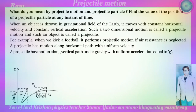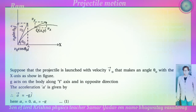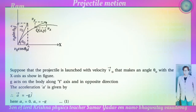A projectile has motion along the horizontal path with uniform velocity, and motion along the vertical path under gravity with uniform acceleration equal to g. Here, the particle is projected to make an angle theta-zero with the x-axis with velocity v-zero. The projectile is launched with velocity v-zero making angle theta-zero with the x-axis.